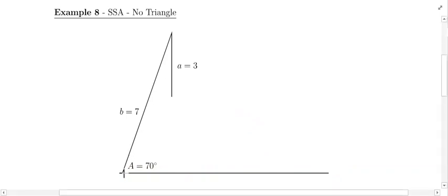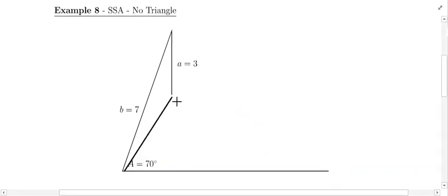If you tried to connect to make a third side, you lose the 70 degree angle. This will show you, since it's drawn to scale, that no triangle is possible.